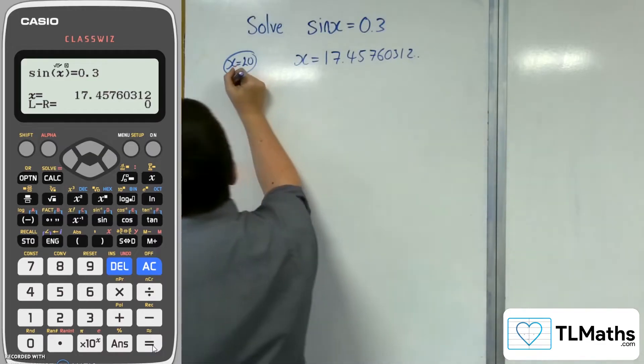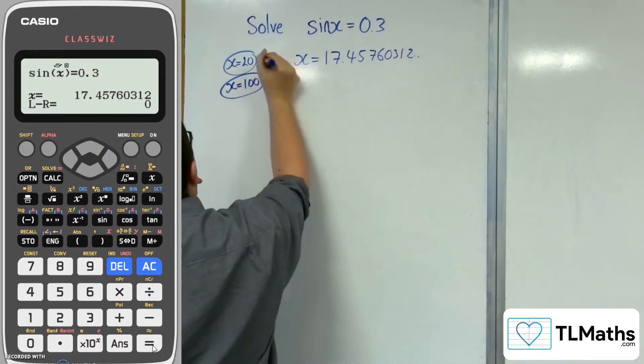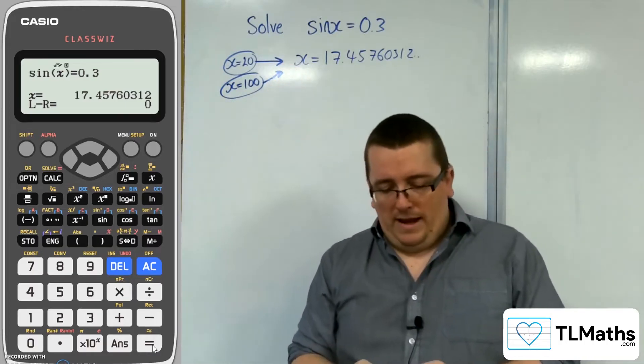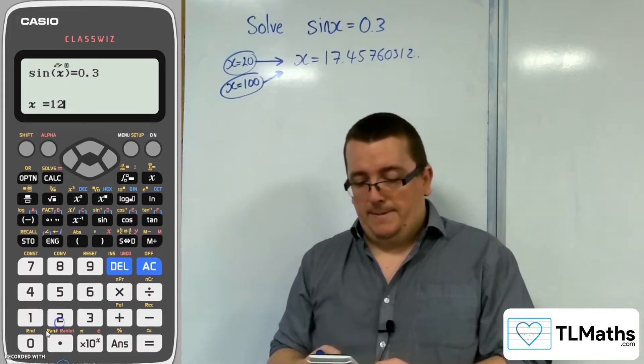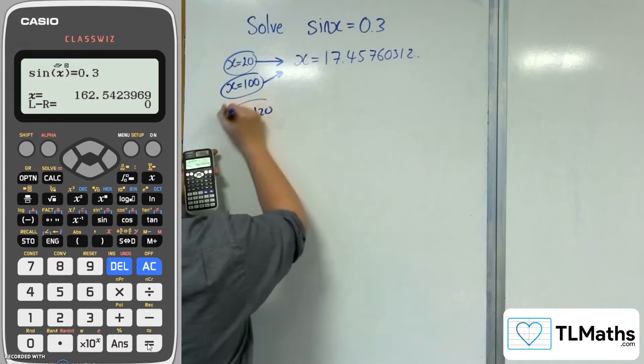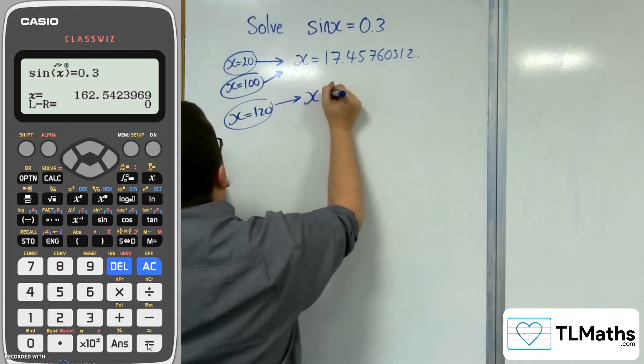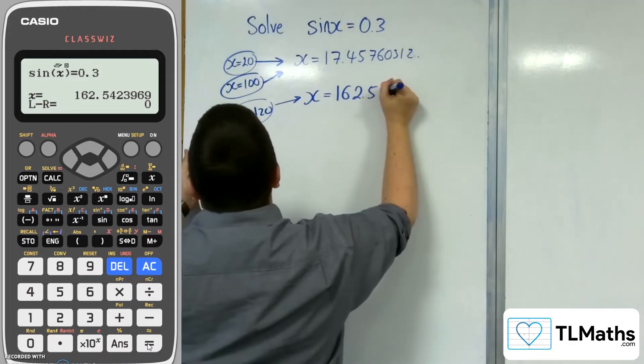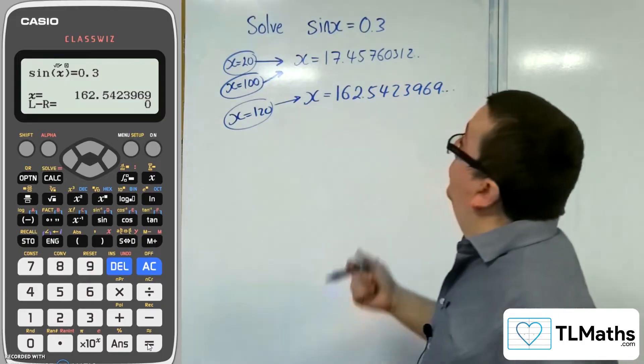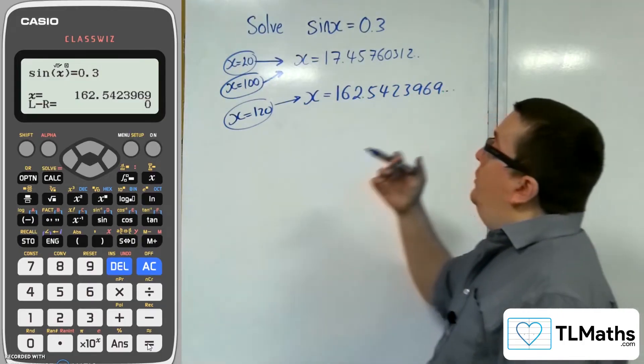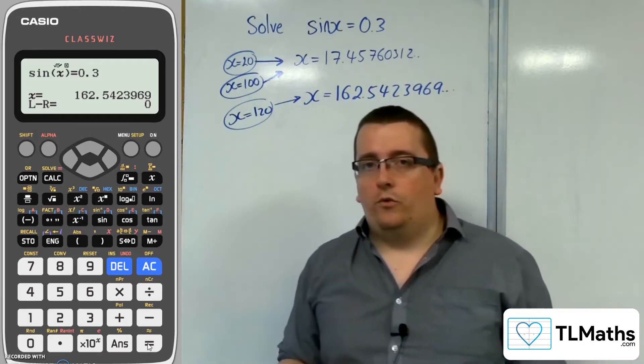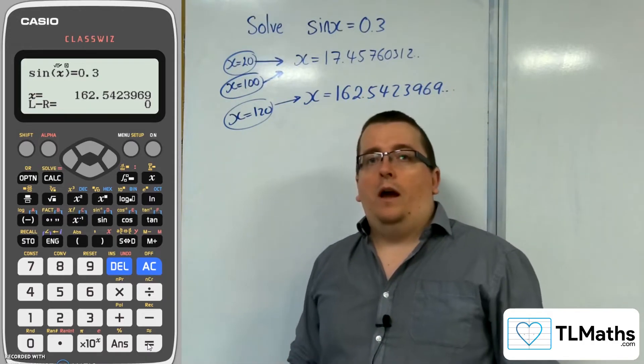Now if I try again, let's say 120. Ah, now x equals 120, I'm actually homing in on a different solution: 162.5423969. So let's say you had to solve sin x = 0.3 in an exam. You can check to see whether your two answers between 0 and 360 match up with this.